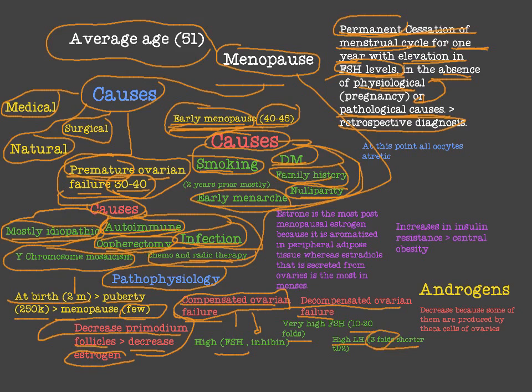The reason LH increases less than FSH is that LH has a shorter half-life. Notably, menopause can be diagnosed when FSH is above 40 IU/L — an FSH above 40 confirms the diagnosis of menopause.